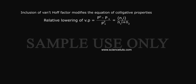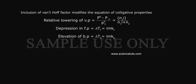Inclusion of Van't Hoff Factor modifies the equation of colligative properties. Relative lowering of vapor pressure is equal to P0 minus PS by PS0 is equal to N1I by N1I plus N2. Depression in freezing point is equal to delta Tf is equal to IMKf. Elevation of boiling point is equal to delta Tb is equal to IMKb. Osmotic pressure of solution pi is equal to ICST.